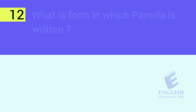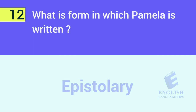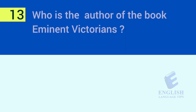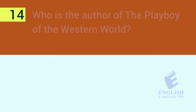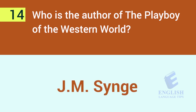Question 12: What is the form in which Pamela was written? The answer is epistolary, or in the form of letters. Question 13: Who is the author of the book called Eminent Victorians? The answer is Lytton Strachey. Question 14: Who is the author of The Playboy of the Western World? The answer is J.M. Synge.